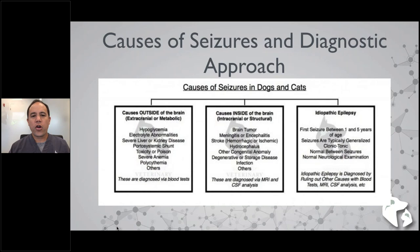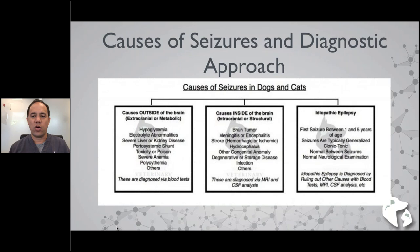The third main cause is idiopathic epilepsy — the most common cause of seizures in dogs and less common in cats. Dogs with idiopathic epilepsy generally have their first seizure between one and five years of age, seizures are typically generalized tonic-clonic, pets are normal between seizures, and they usually have a normal neurological examination. However, idiopathic epilepsy is a diagnosis of exclusion — the only way to truly diagnose it is by ruling out all extracranial and intracranial causes.